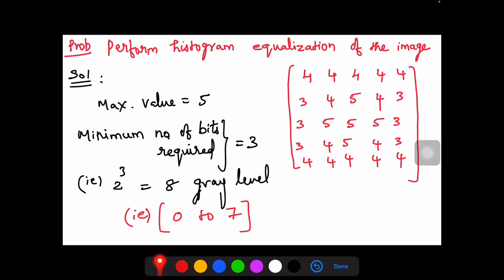Let us understand this with a problem. Let us perform histogram equalization for the image. The image is given here as a 5 by 5 matrix with values 3, 4, 5, 4, 3 and so on.